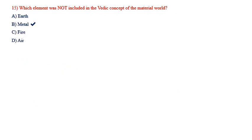Which element was not included in the Vedic concept of the material world — earth, fire, air — and the answer option is metal.